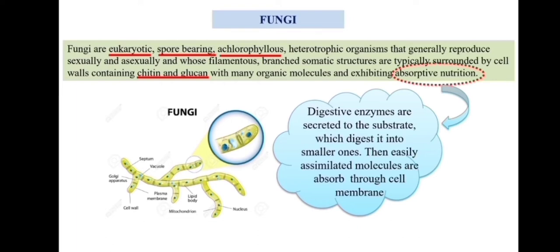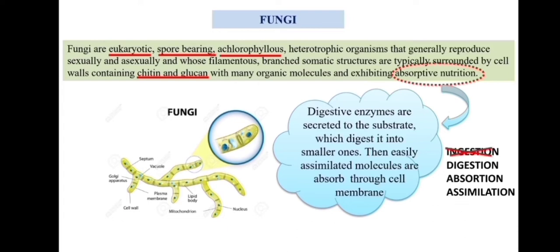The difference between human mode of nutrition and fungal mode of nutrition is that human nutrition involves ingestion, where food is ingested by mouth. But in the case of fungi, it does not contain any type of mouth or specialized structure. So the ingestion step is not there. The digestive enzyme is directly secreted outside, and only three steps are involved: digestion, absorption, and assimilation.